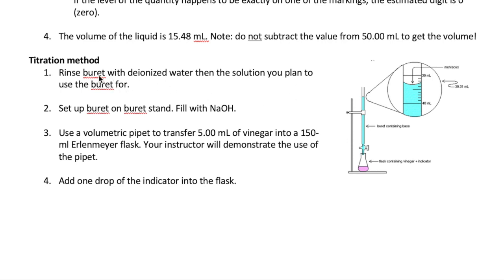To titrate, first rinse your burette with deionized water — swirl it around to wash the inside — then rinse again with the solution you'll be using, which in this case is NaOH. Set up the burette in a burette stand, sometimes called a butterfly stand, and fill it with NaOH. The fill level is up to you; starting at 0.00 mL is ideal and easy to read, but any starting volume works since what matters is the volume taken out, not the total volume in the burette.